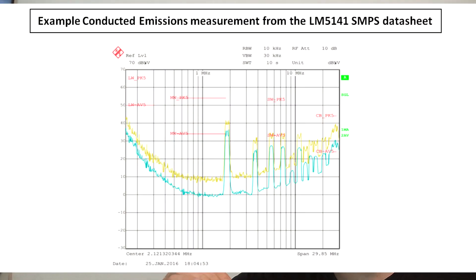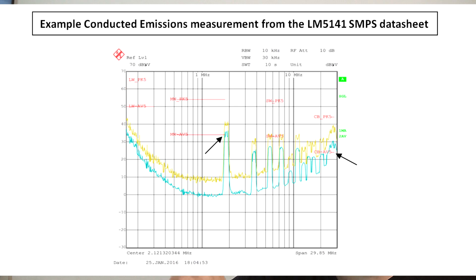Now the main issue with interpreting the results that you get from an emissions test is that it will tell you exactly the frequency at which you have your problem. But it won't really tell you where exactly on your unit the problem is coming from.